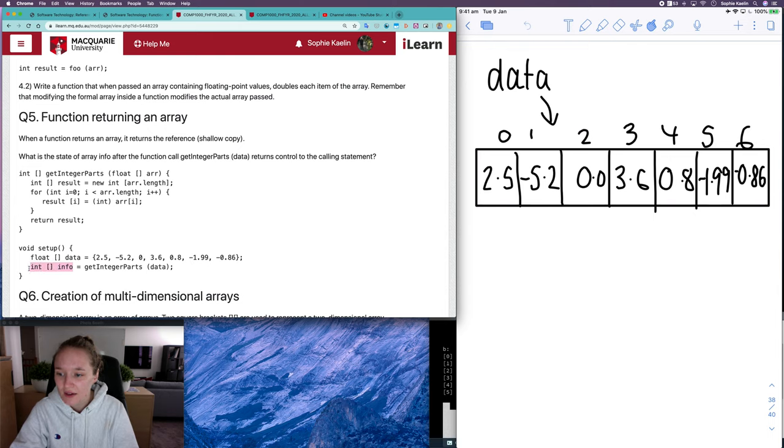and then here I have an integer array called info which is equal to the return value or the output of this function when you pass in this array as its parameter. So we're going to get a return value from this function and that's what this integer array info is going to be referencing.